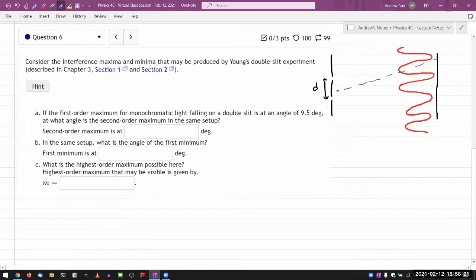And we'll be describing theta here. Okay, so the part A asks, if the first order maximum for monochromatic light falling on a double slit is at an angle of 9.5 degrees. Okay, let me start labeling these things. So first order, that's referring to where. So whenever you're dealing with the Young's double slit experiment, then you are limiting to just describing constructive and destructive interference, meaning the maximum and minimum.